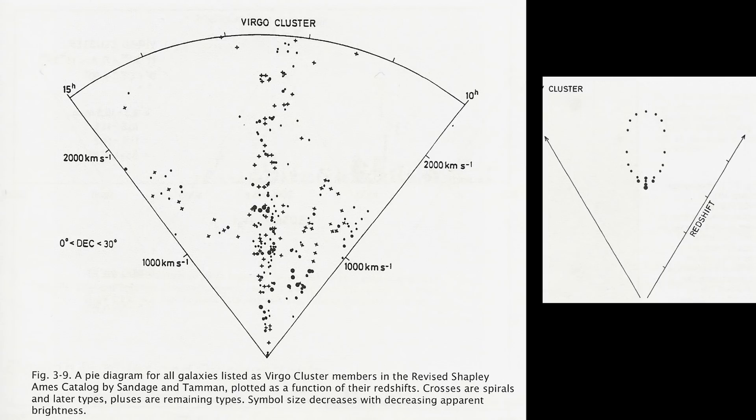So it somehow is pointing to the fact that our assumption particularly when we look at the Virgo cluster is wrong because we end up with this diagram that has these massive lines in the centre of redshift.